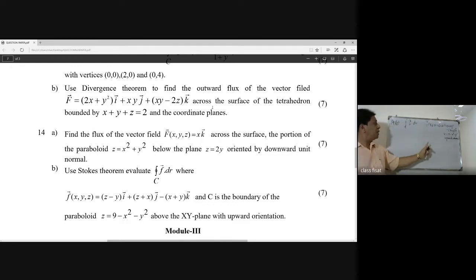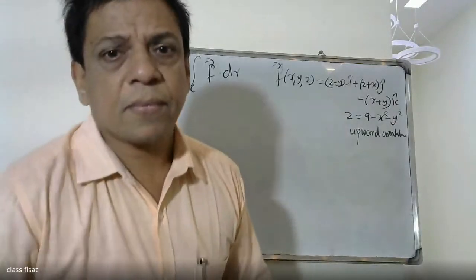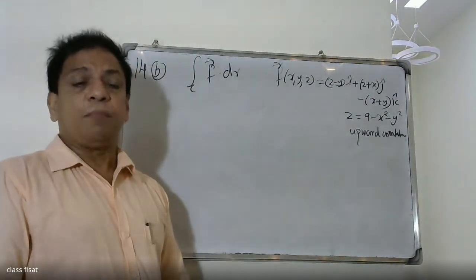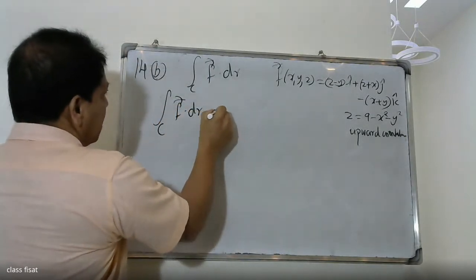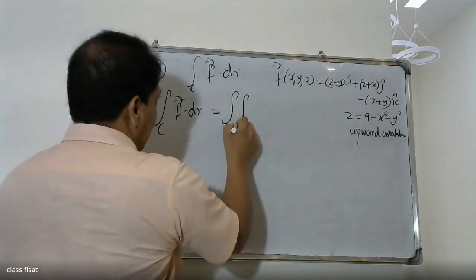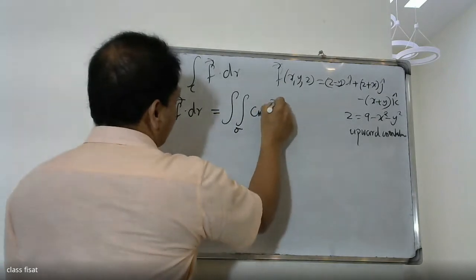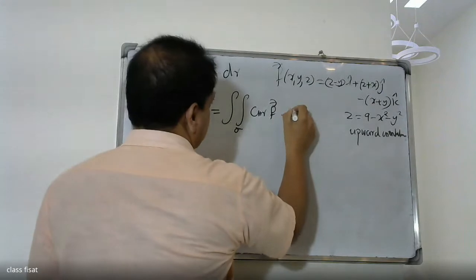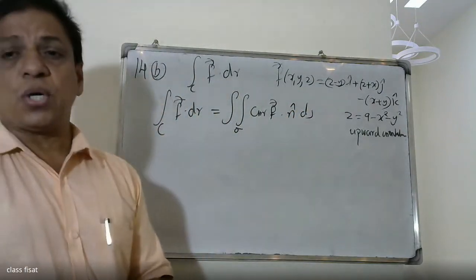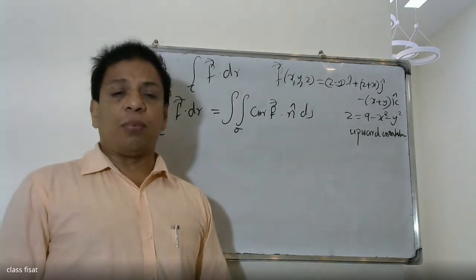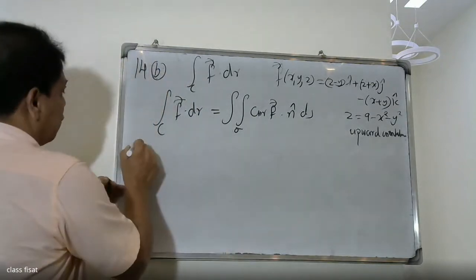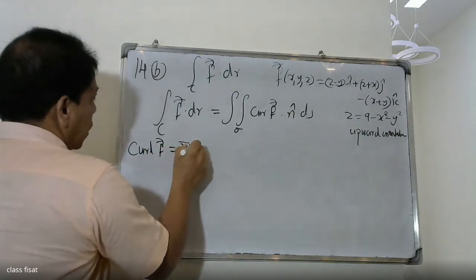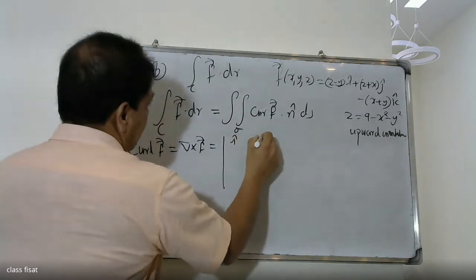This is integral of C F dot dM. We find the curl using the del operator, setting up the determinant with i, j, k in the first row and the del process.